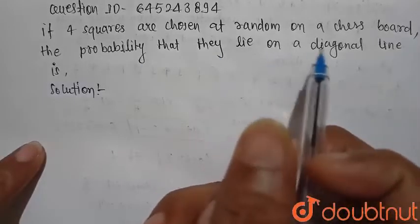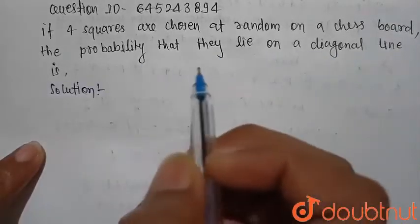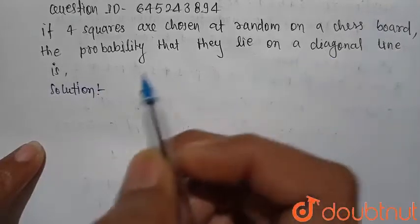If four squares are chosen at random on a chessboard, the probability that they lie on a diagonal line.